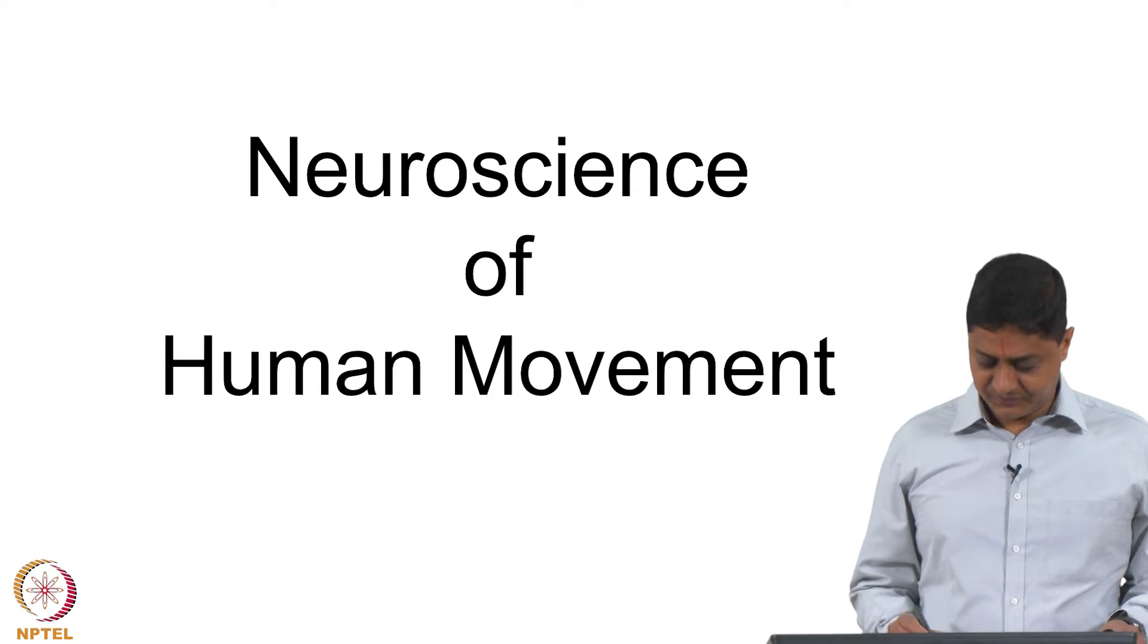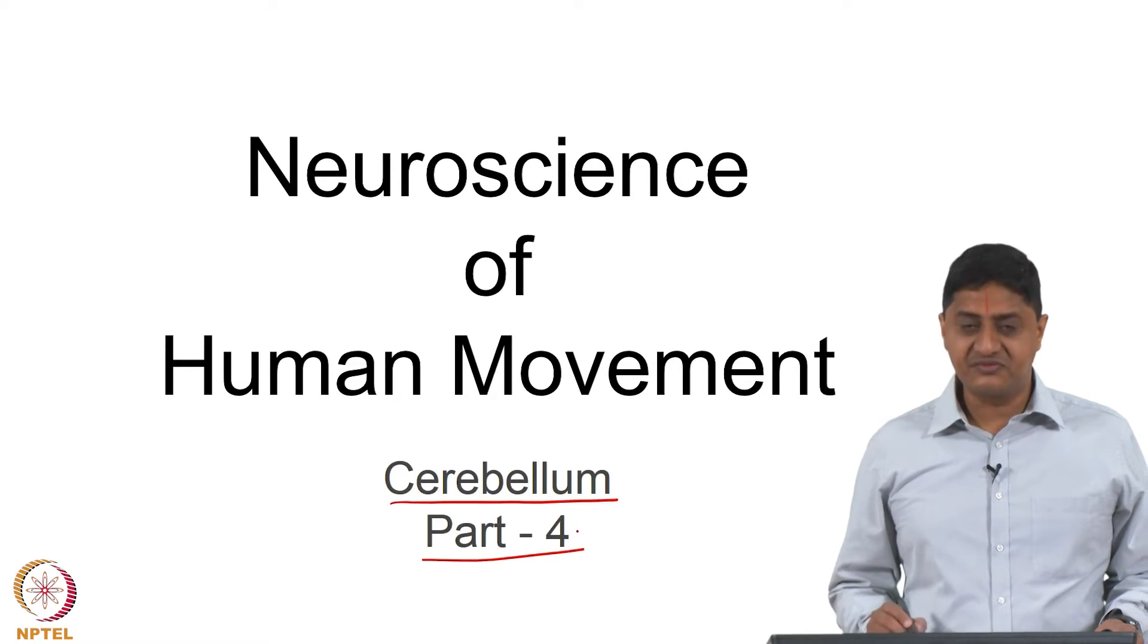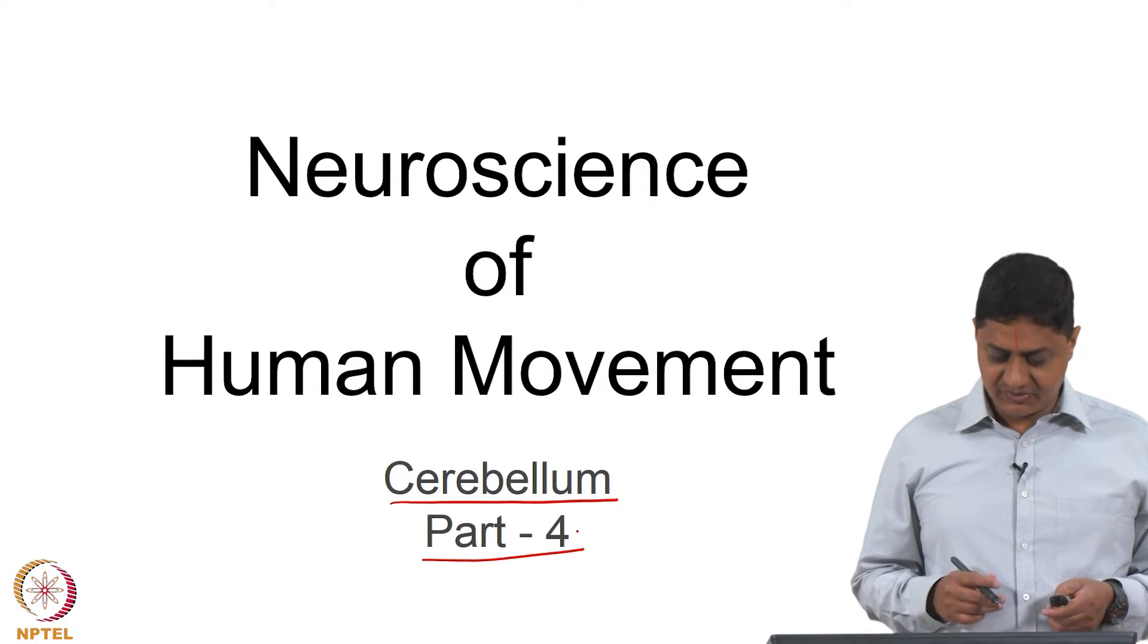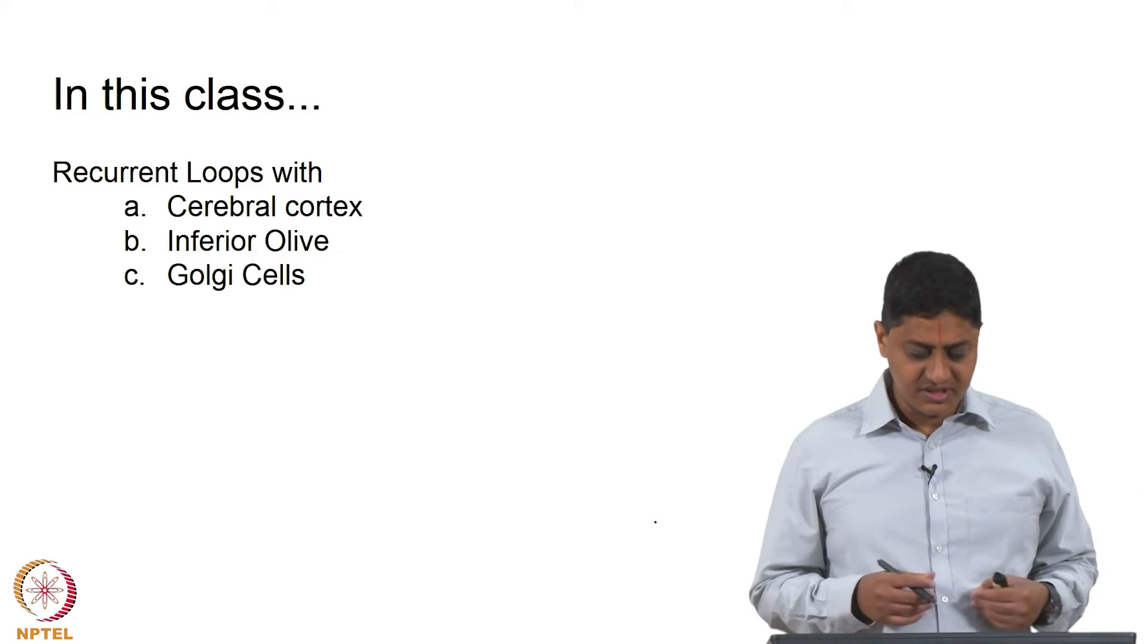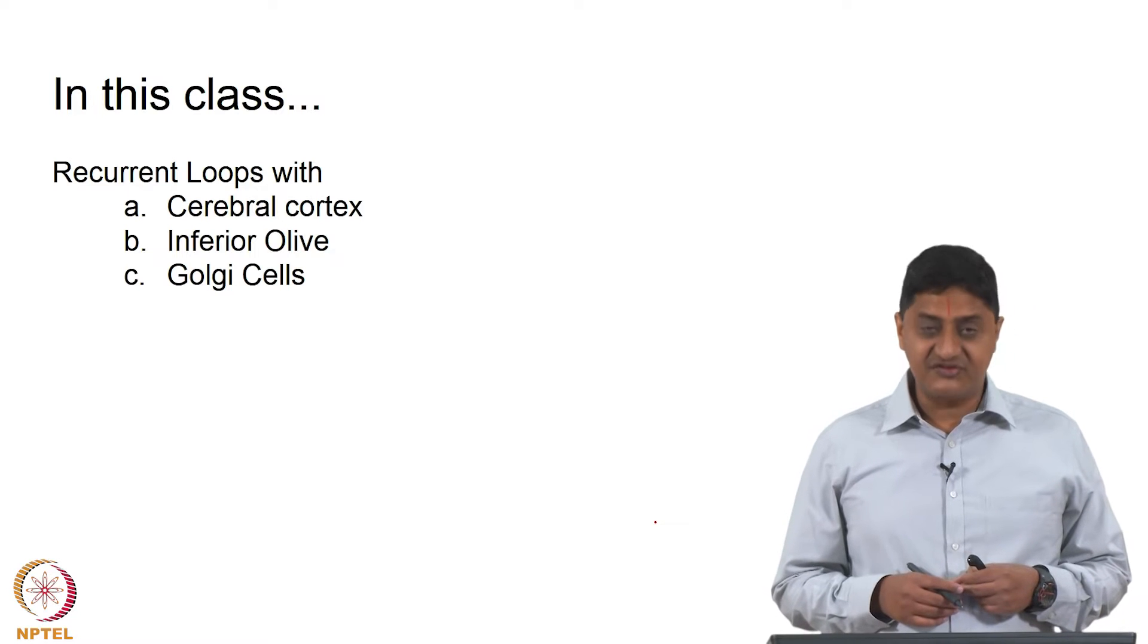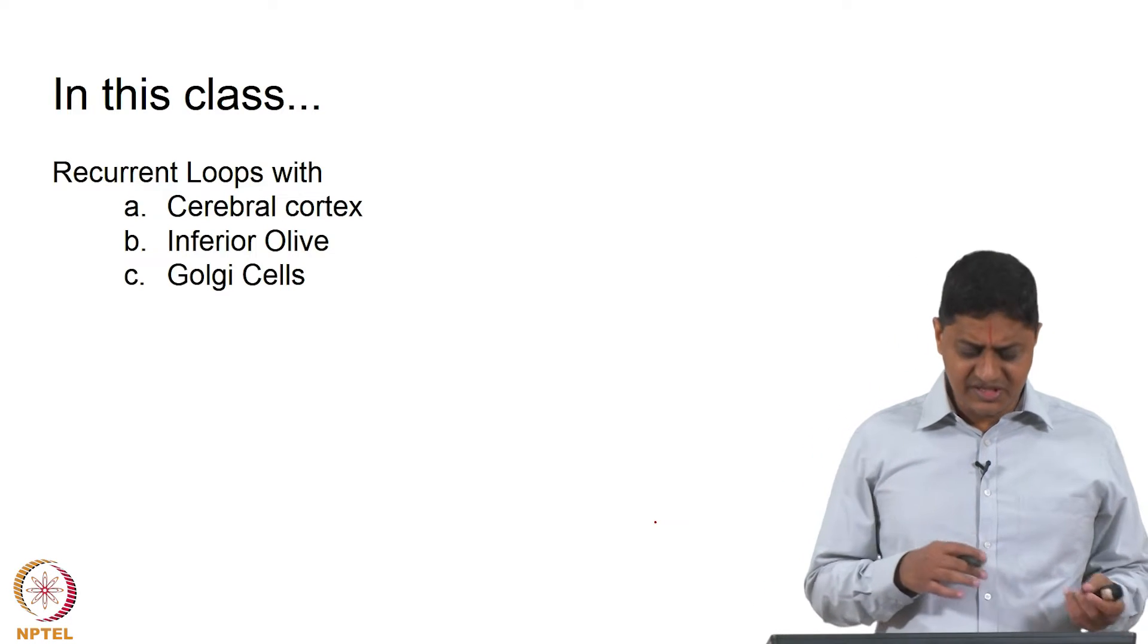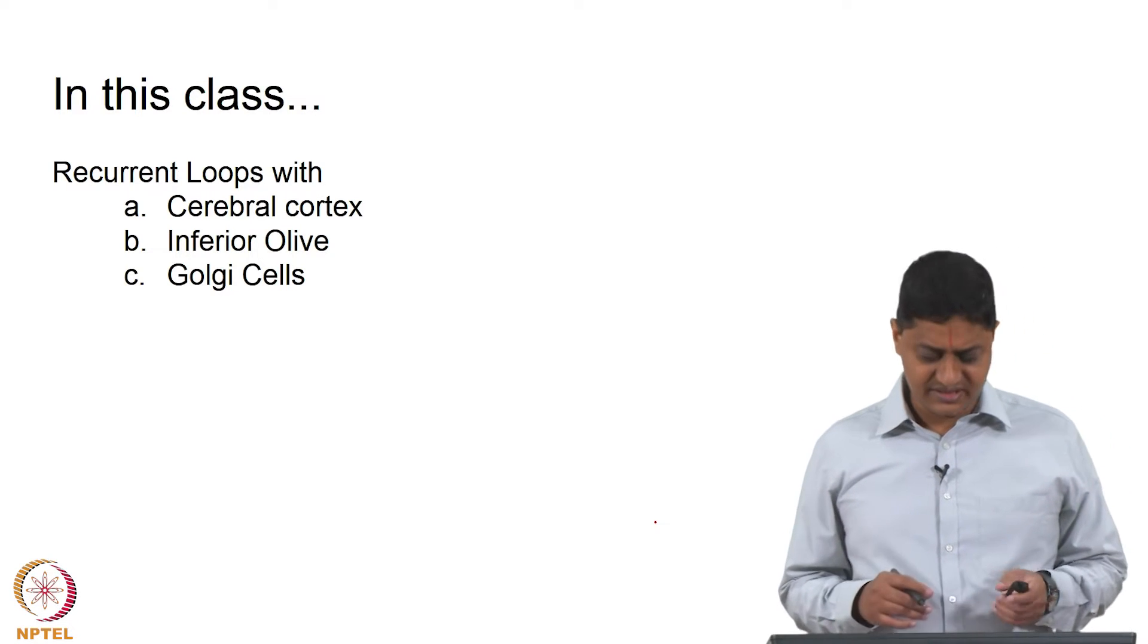Welcome to this class on Neuroscience of Human Movement. In this class we will continue our discussion on cerebellum. This is part four of our discussion on cerebellum. In this class we will be talking about recurrent loops that cerebellum has with cerebral cortex, inferior olive, and Golgi cells. We briefly mentioned this in the previous class; we will discuss that with some details in this class.